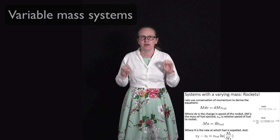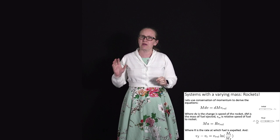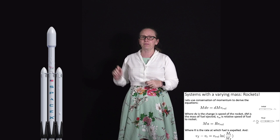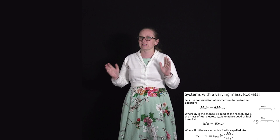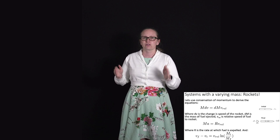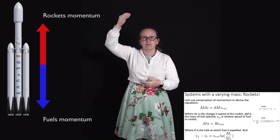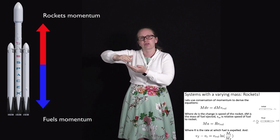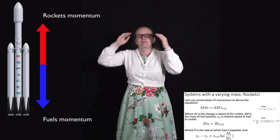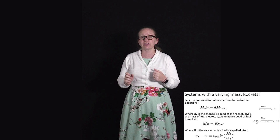So far we've considered momentum in systems where mass doesn't change, but this isn't always the case. A rocket is a good example: much of its mass is fuel. As it launches, the expelled fuel carries downward momentum, and the rocket gains upward momentum. There are no significant external forces compared to the internal forces from expelling the fuel, so total momentum of the rocket-fuel system remains zero.